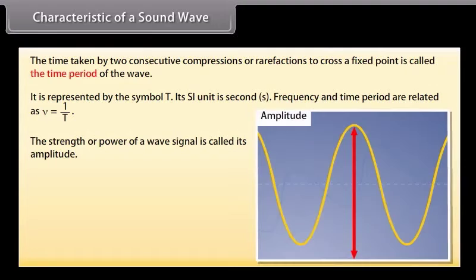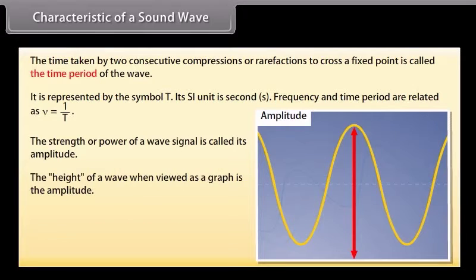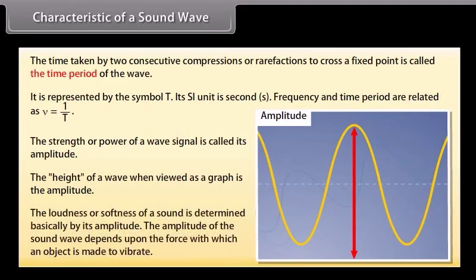The strength or power of a wave signal is called its amplitude, or the height of the wave when viewed as a graph is the amplitude. The loudness or softness of a sound is determined basically by its amplitude. The amplitude of the sound wave depends upon the force with which an object is made to vibrate.